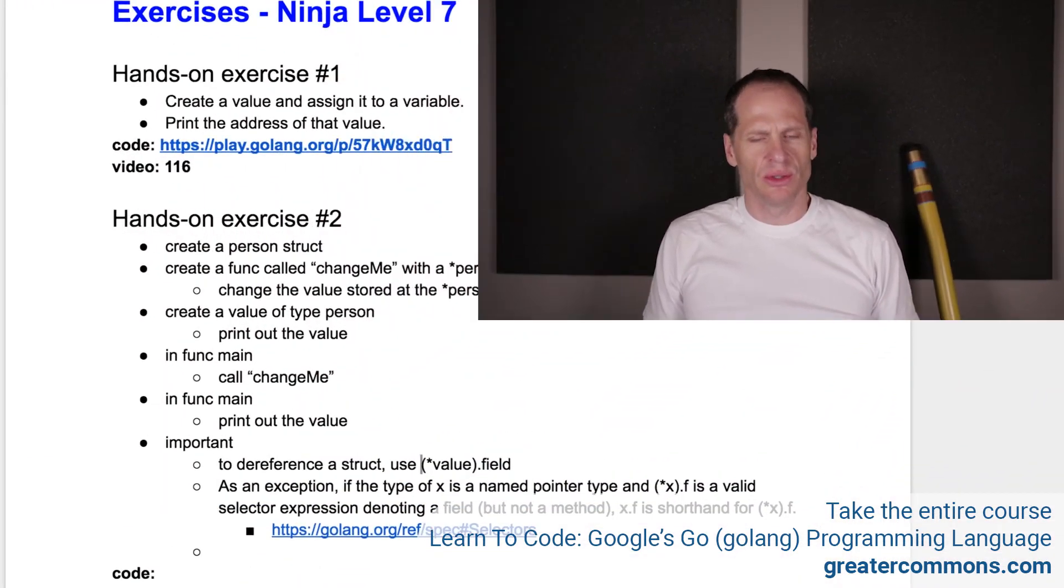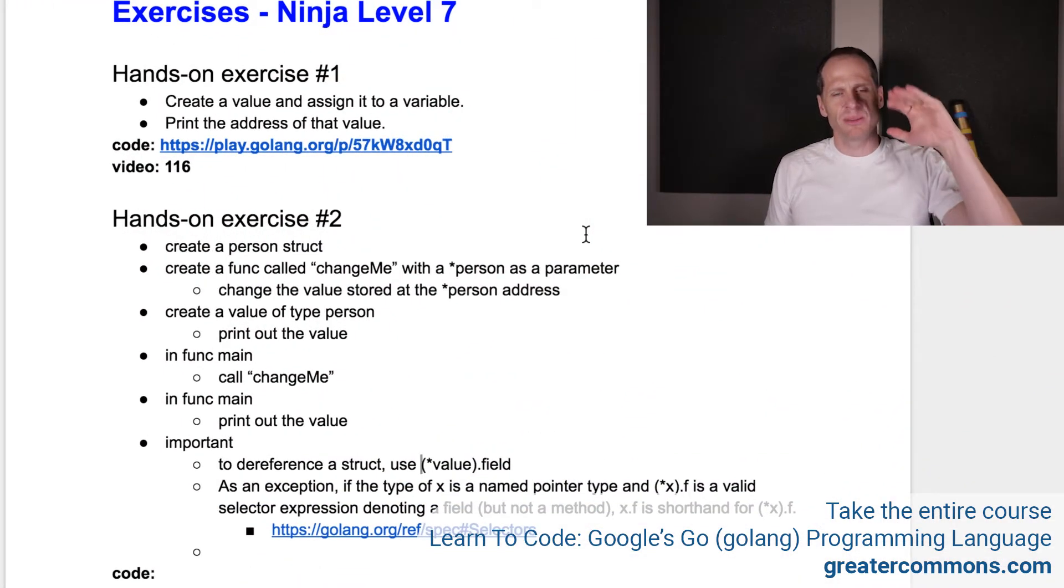Hands-on exercise number two. It's got a little bit of a curve ball in it, so make sure you hear the entire description. I want you to create a person struct and then create a function called changeMe with a pointer to a person as a parameter. So changeMe will take a pointer to a person as a parameter. Change the value stored at the pointer to the person address.